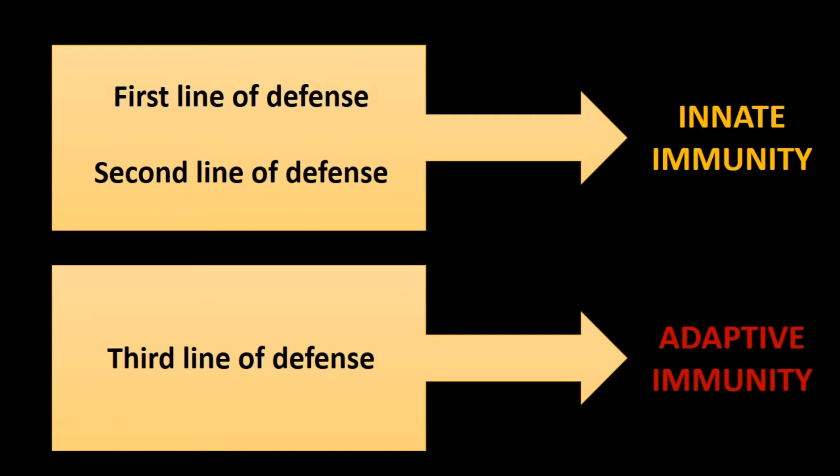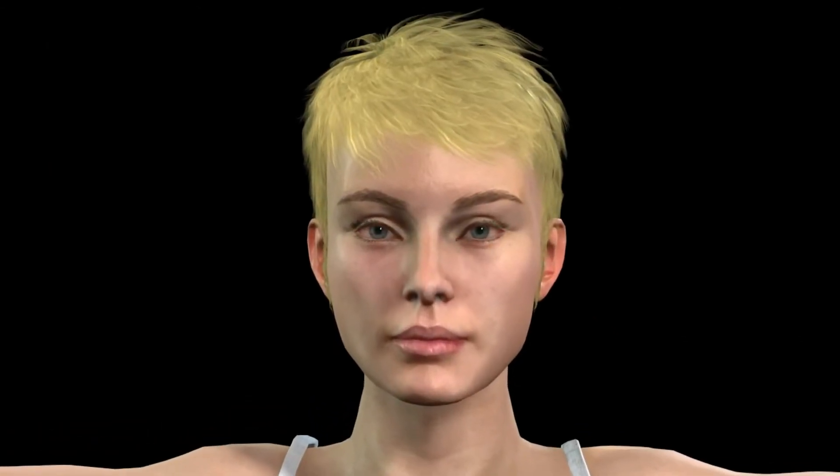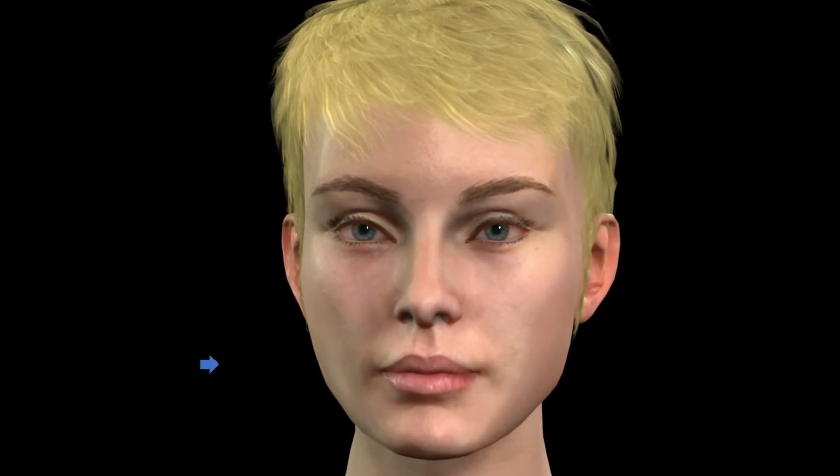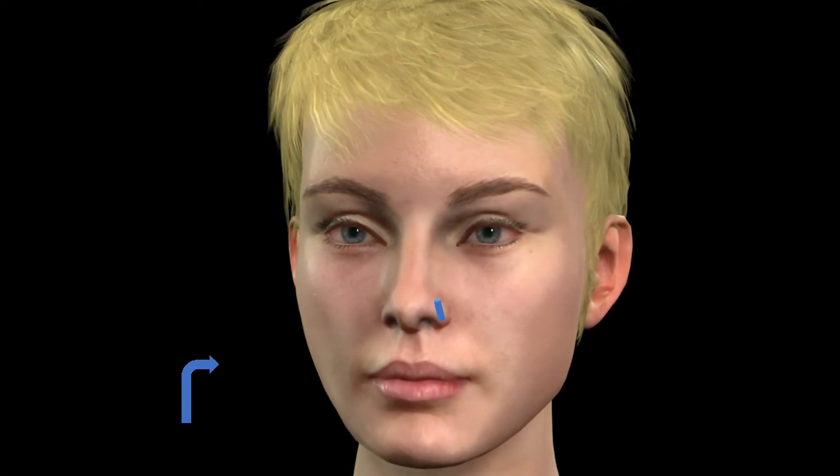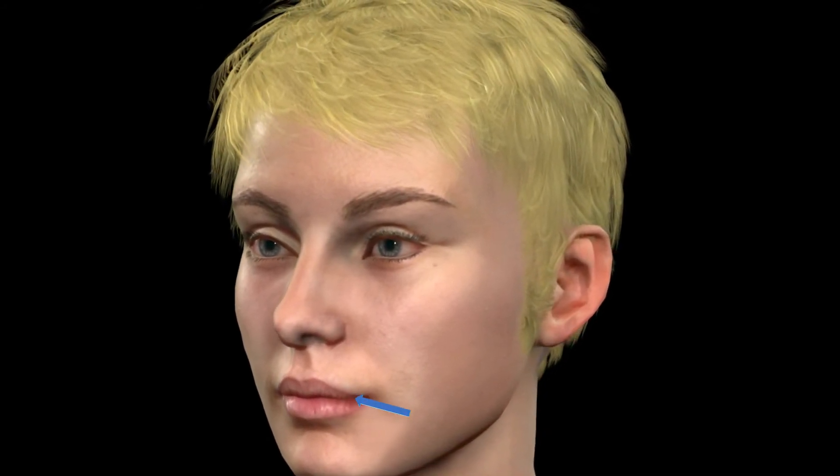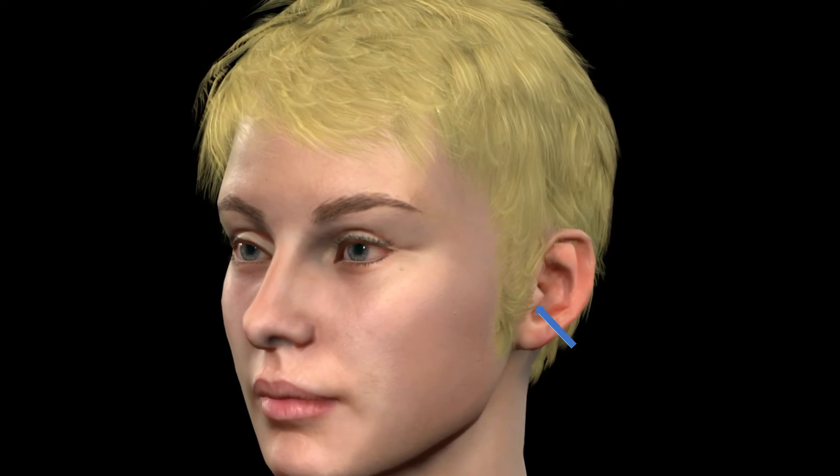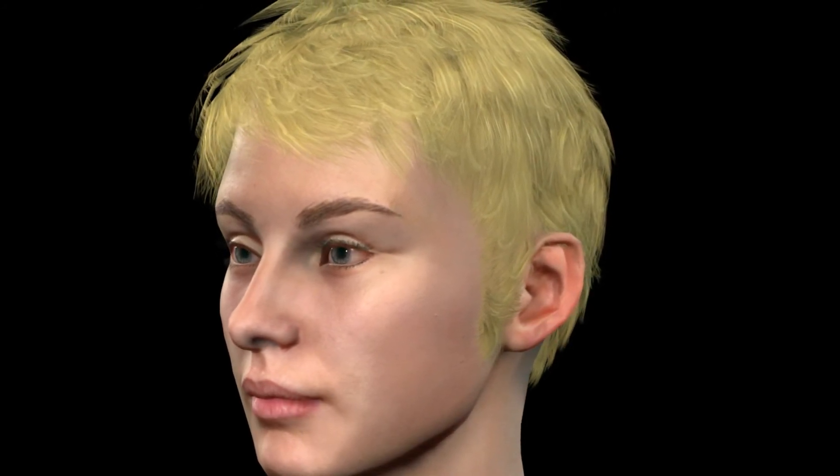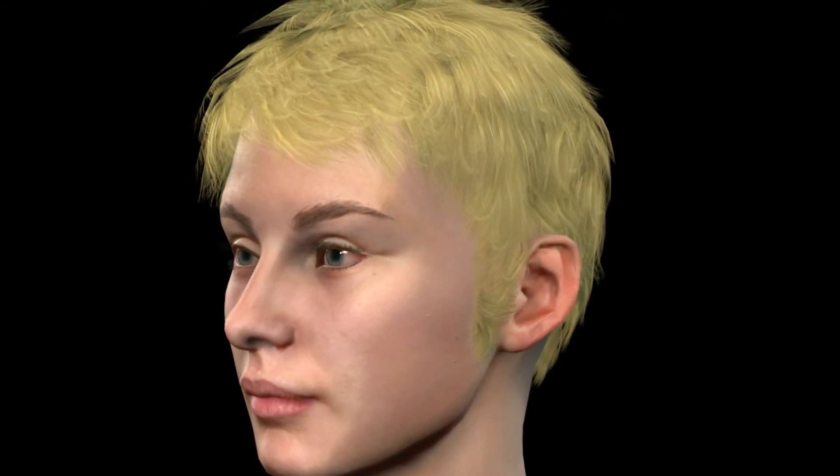First and second lines represent innate immunity. Third line represents adaptive immunity. The first line of defense includes the skin which covers the whole body, tears in the eyes, mucus in the respiratory tract, saliva in the mouth, and earwax. The function of this line is to prevent any microbe from entering the body.